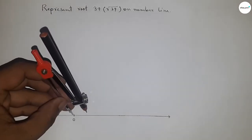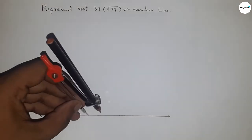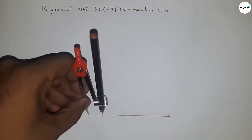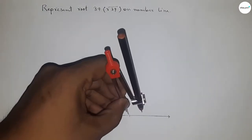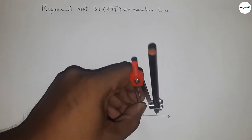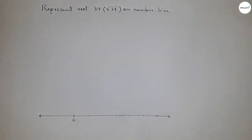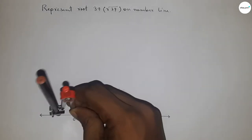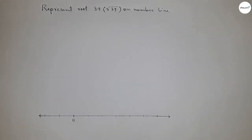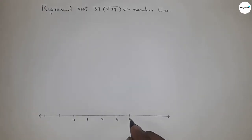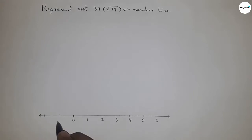Take any length by compass and mark the numbers on the line. This length is called unit length — the distance between any two numbers is one unit length. Mark 1, 2, 3, 4, 5, 6 and so on, and on the other side minus 1, minus 2, and so on.